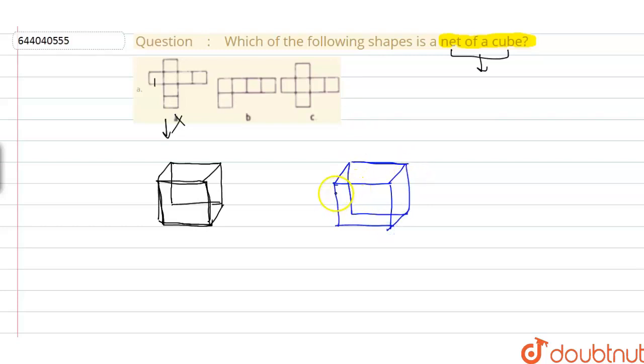Finally, we have to consider this net and then draw a cube. If it is possible, then this could be the possible answer for the given problem. Now when we are folding this net, actually